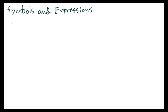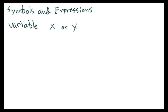Symbols and expressions: in algebra we use different symbols and expressions, and in this lesson we're going to learn some vocabulary that's going to be useful as we go through algebra. The first thing, and it's probably the most important thing to know, is what a variable is. A variable is simply a letter that represents a number. You'll see x as a variable, or y or a, and they can be lowercase or uppercase.